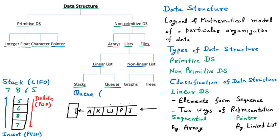The queue is FIFO — first in first out. Person A was coming first, so they are the first person and they go to the window first. The person who comes first will get the chance first. That is called FIFO — first in first out. The person who comes first will come out first.